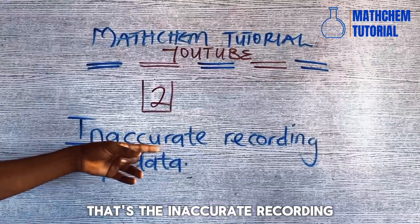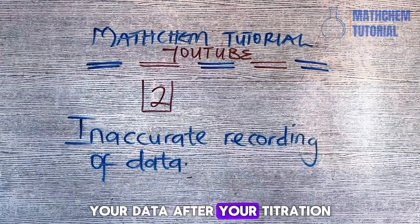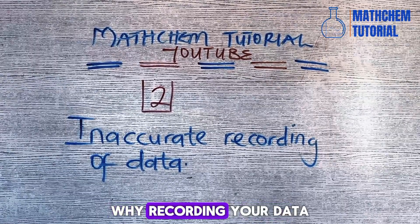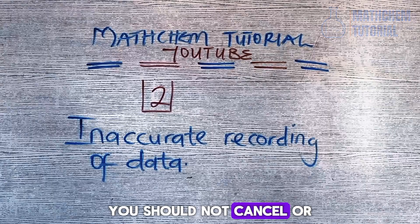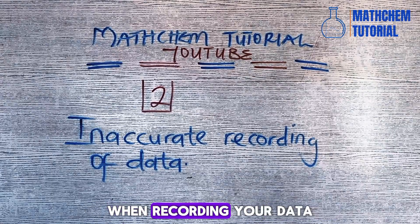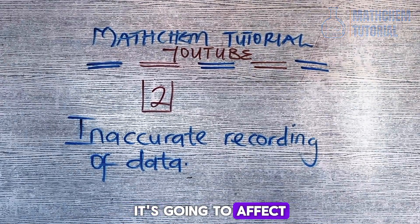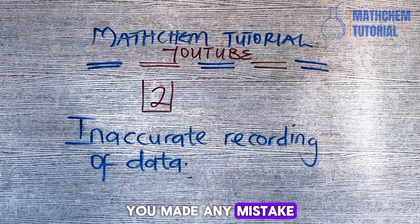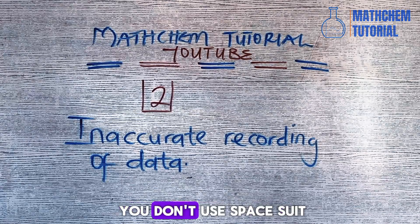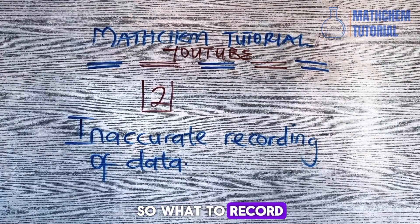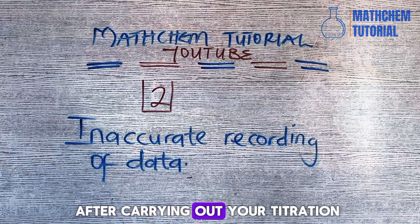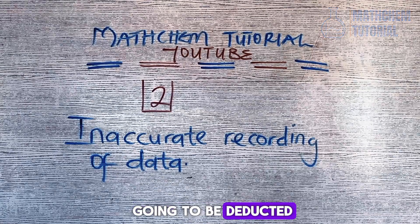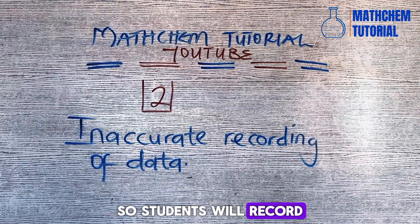Number two is inappropriate recording of data. After your titration, what you should be concerned about while recording your data: number one, you should not cancel anything when recording your data, because canceling will affect your mark. Also, you don't obliterate anything by shading with your pen. If you made any mistake, avoid altering it. Also, you don't use pencil to record when you are recording your data after carrying out your titration — if you use pencil to record, it's going to deduct your mark.